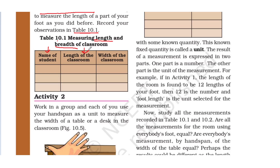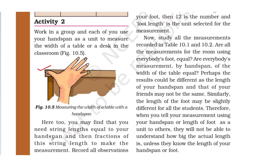Next is Activity 2. Work in a group and each of you use your hand span as a unit to measure the width of the table or desk in the classroom. Your hand span is the unit to consider — just as we used foot length in Activity 1. Measure the width of the classroom table or desk using your hand span. In Table 10.5, record the width (चौड़ाई) of the table measured with a hand span.